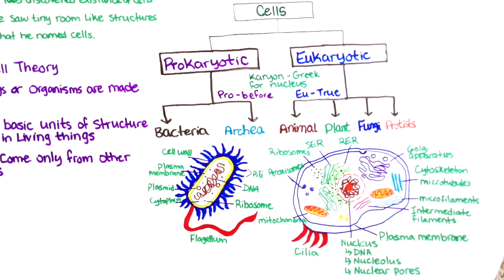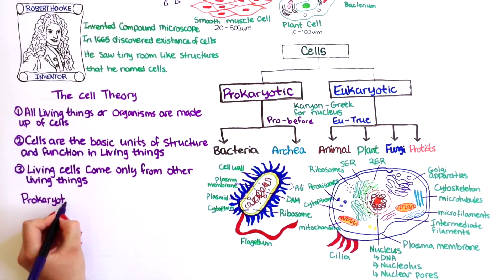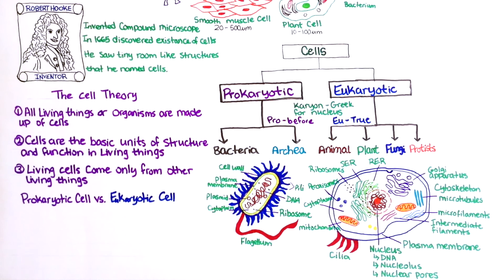Ribosomes perform precisely the same function in eukaryotic cells as they perform in prokaryotic cells. Eukaryotic ribosomes are larger and more complex than prokaryotic ribosomes, but they're very similar. So let's quickly recap what we've learned about prokaryotic cells and eukaryotic cells.